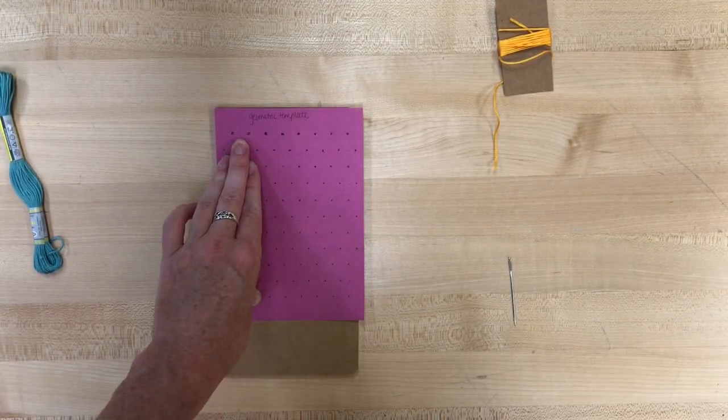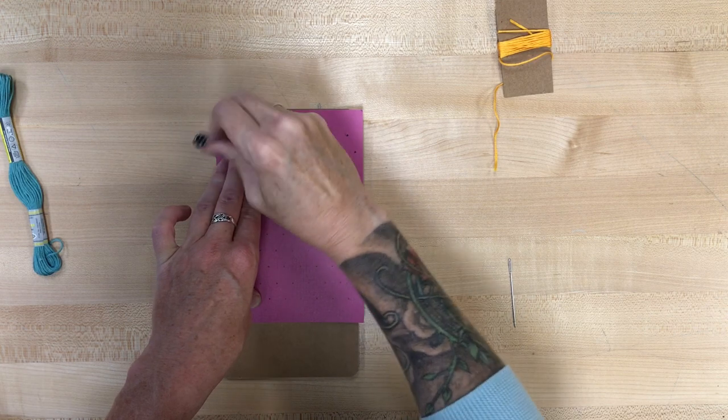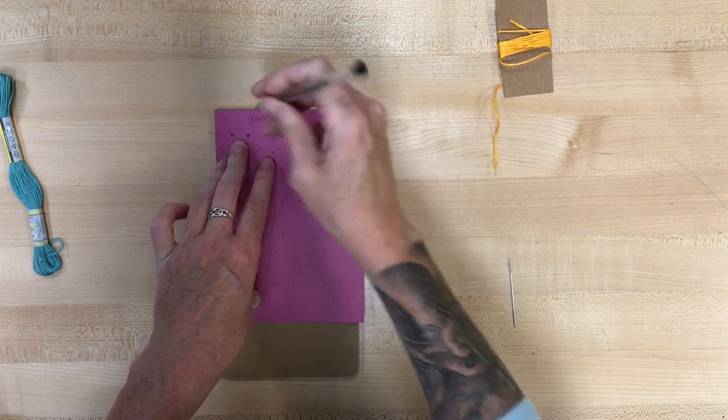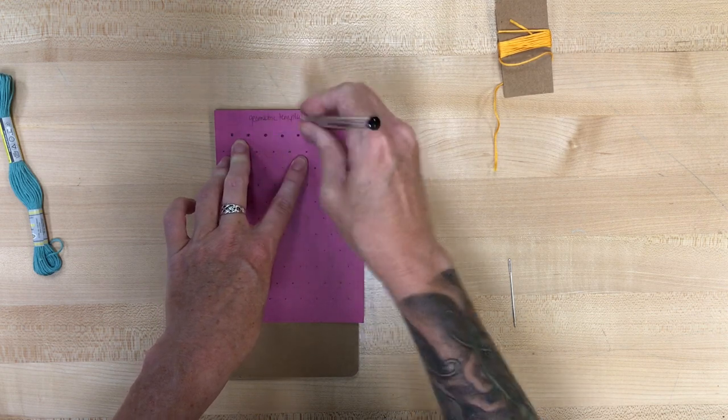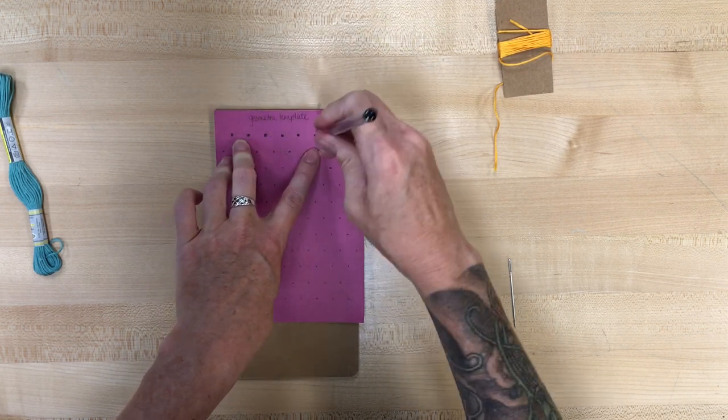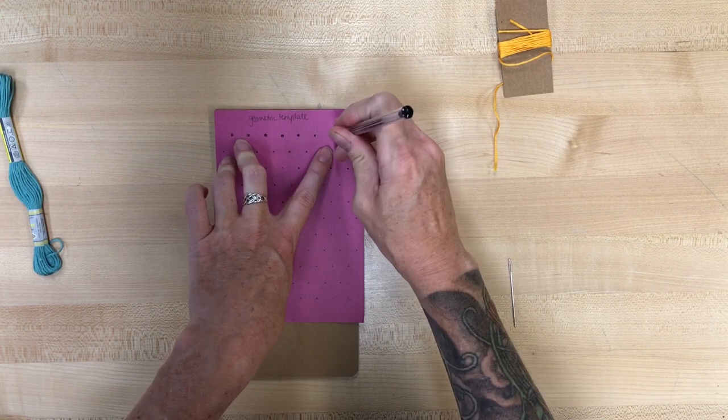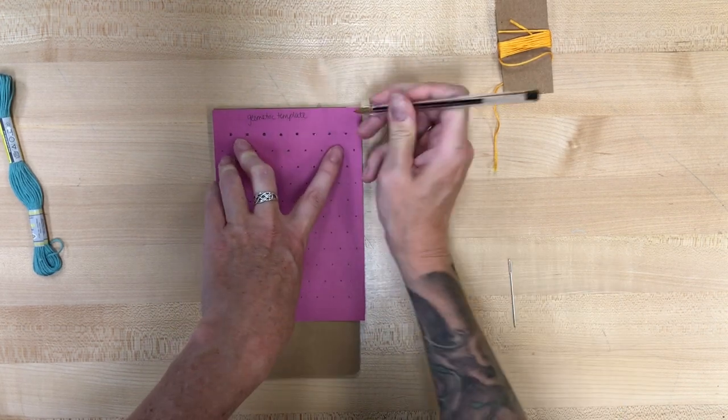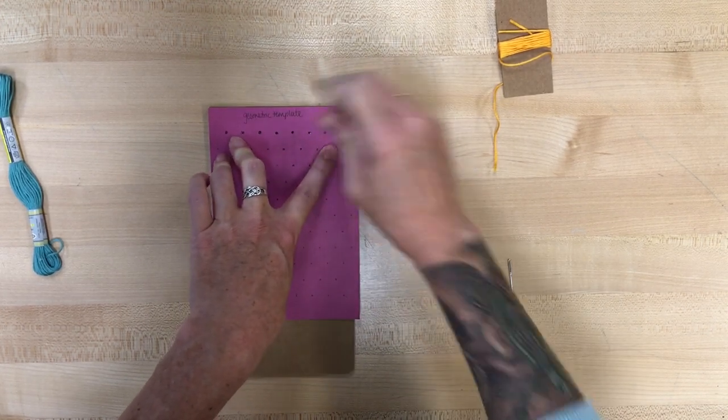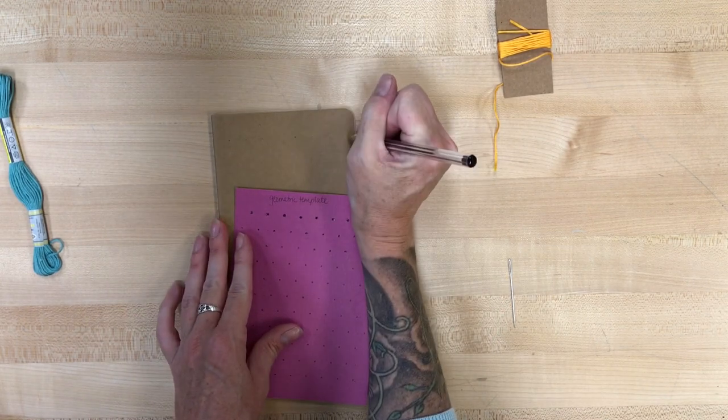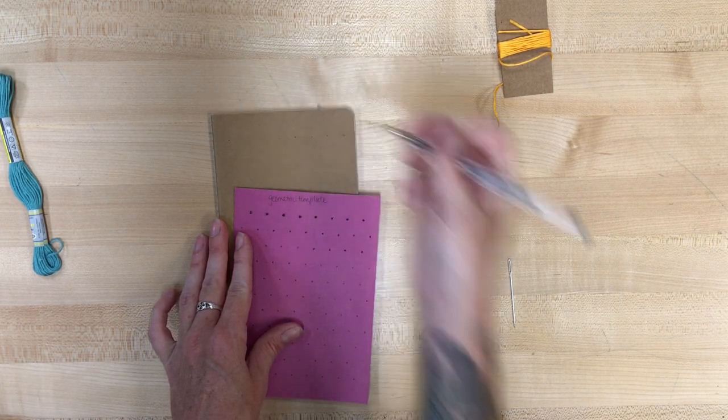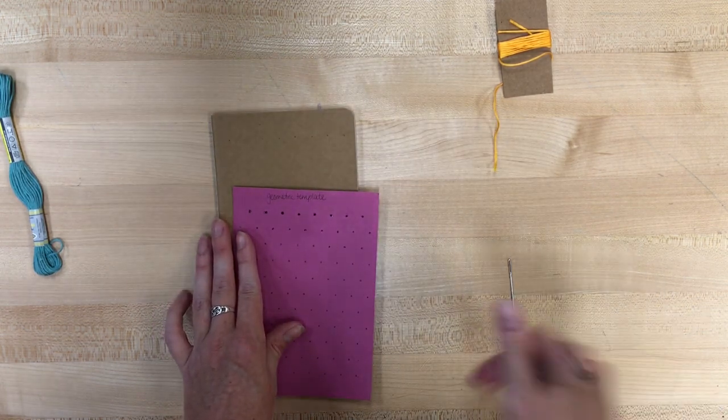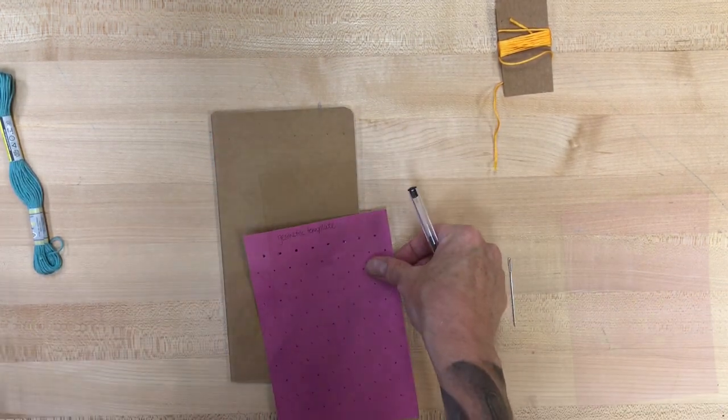Once you have marked, once you have poked through those holes, you can then take a pen or pencil and use that to mark the front of your notebook. And then you can use what you've marked on the front of your notebook as your guide for poking holes in the beginning. And then you'll be able to sew in between those. And that's what the back of the template shows is that the pattern to sew.